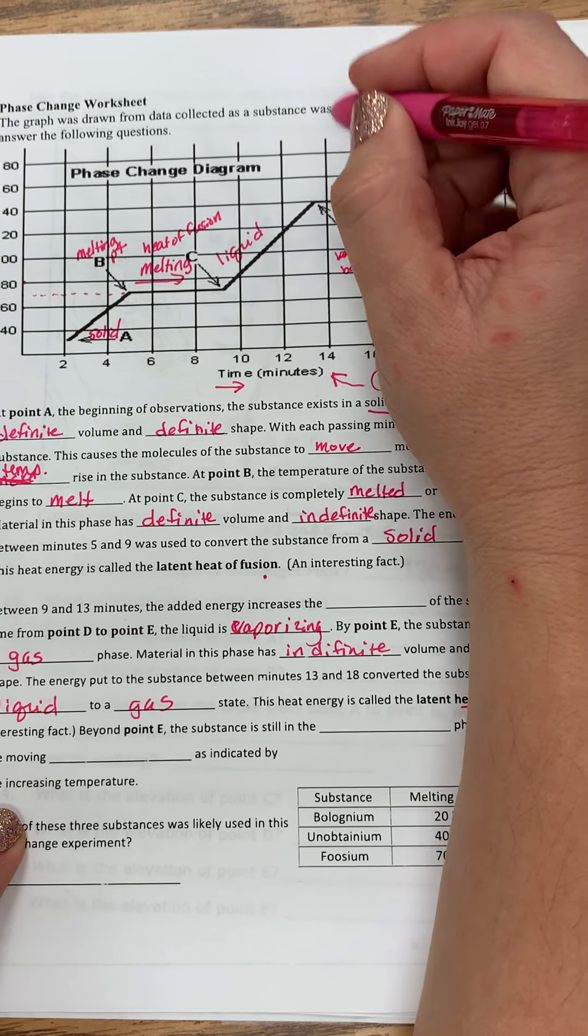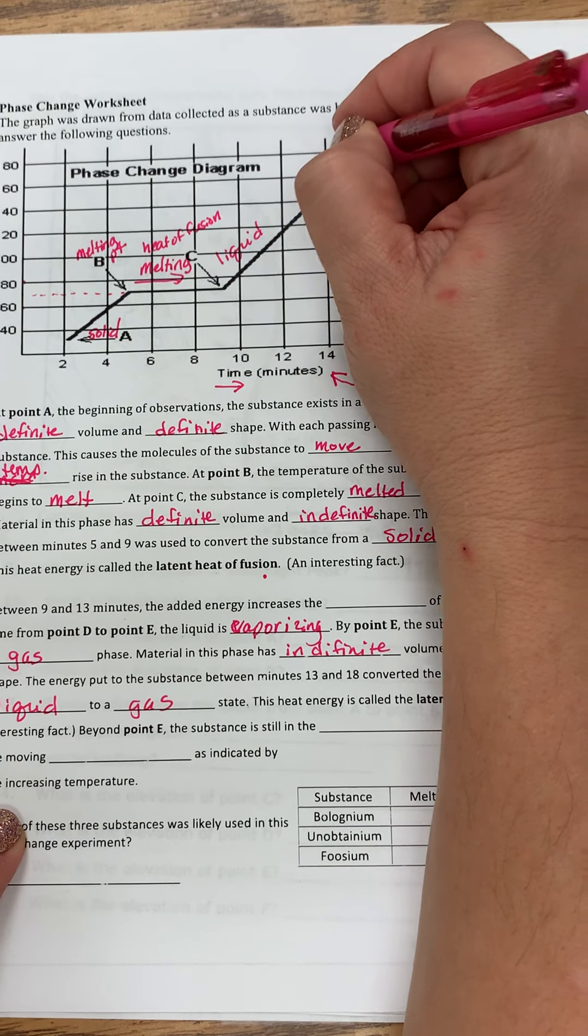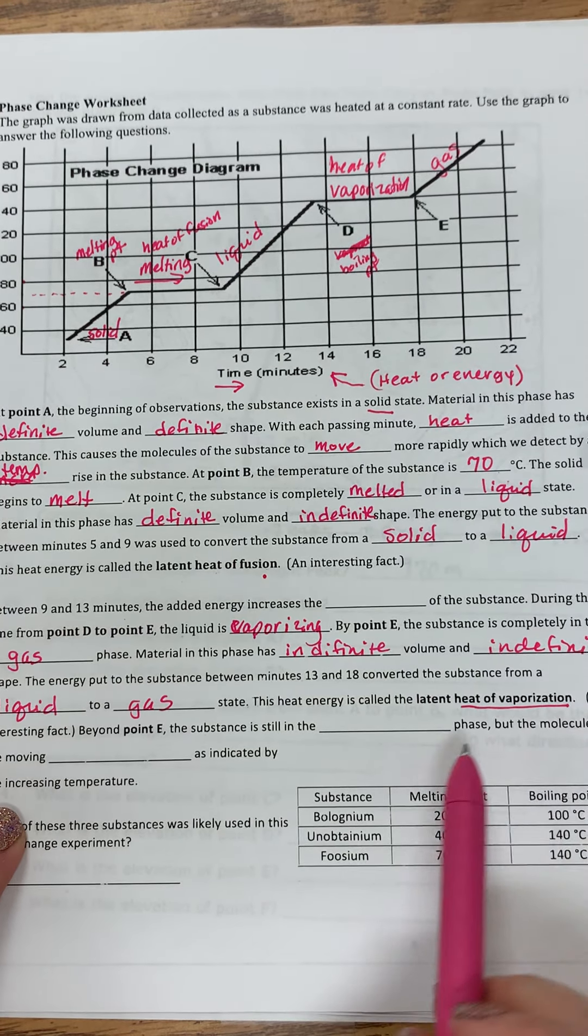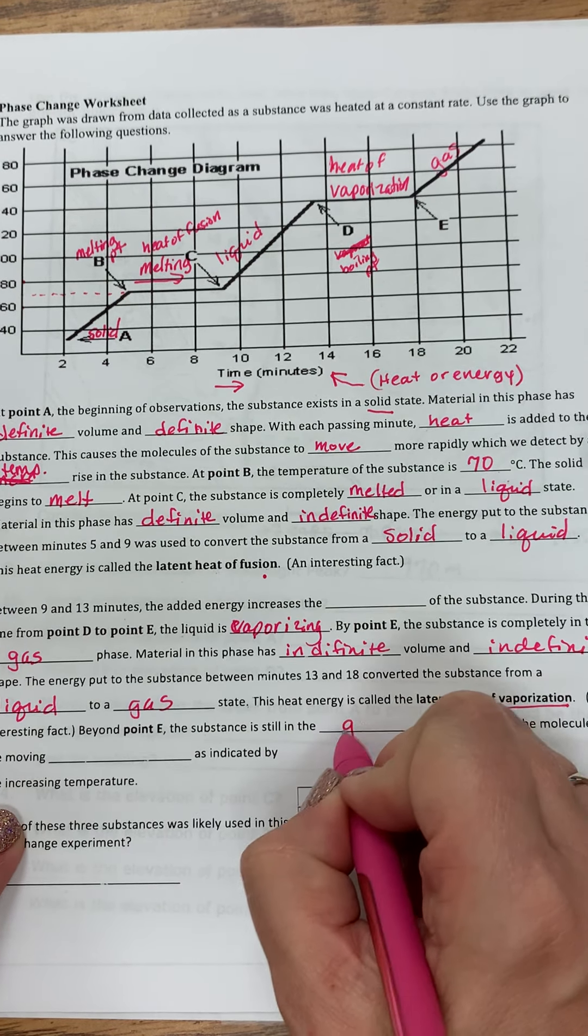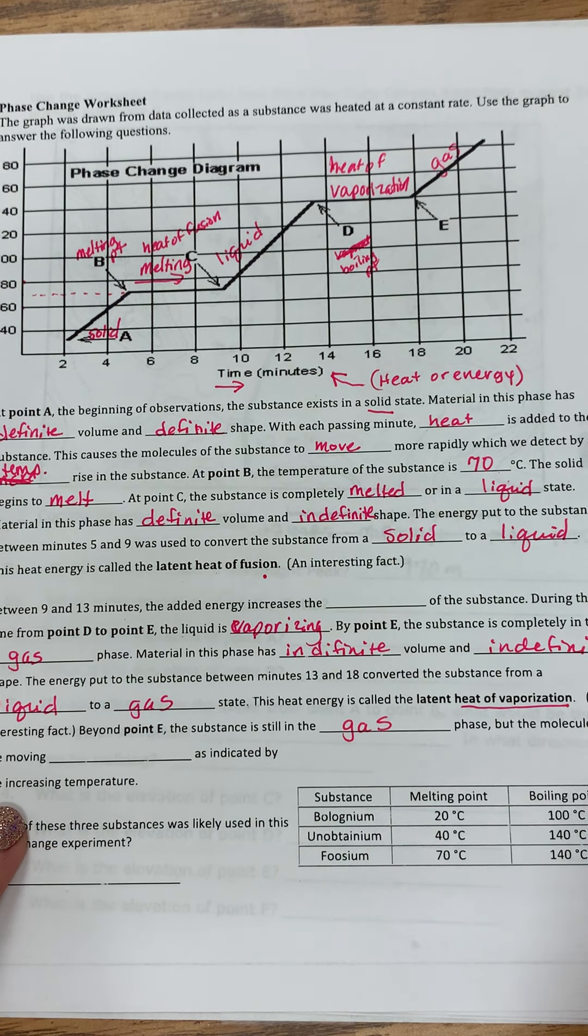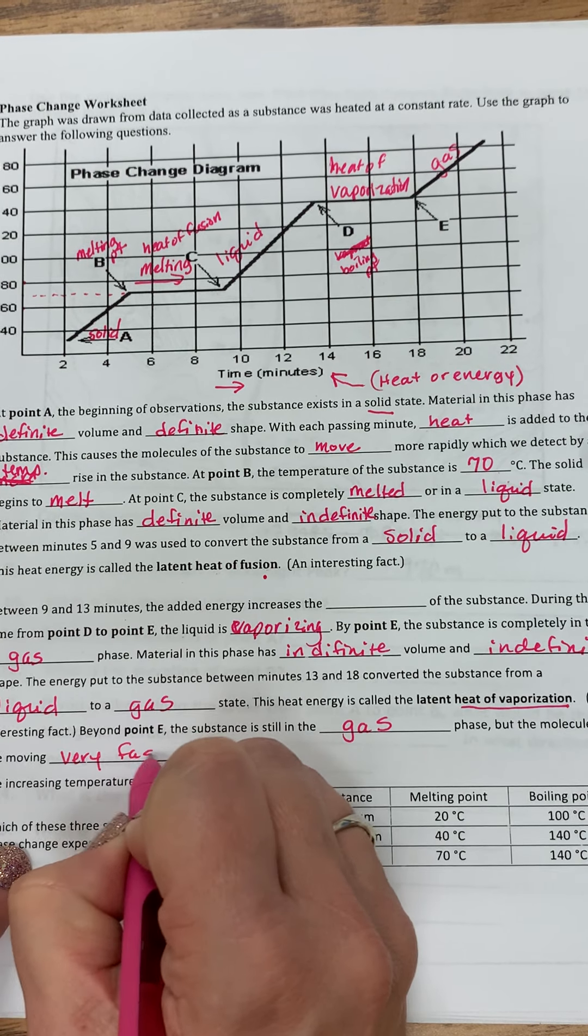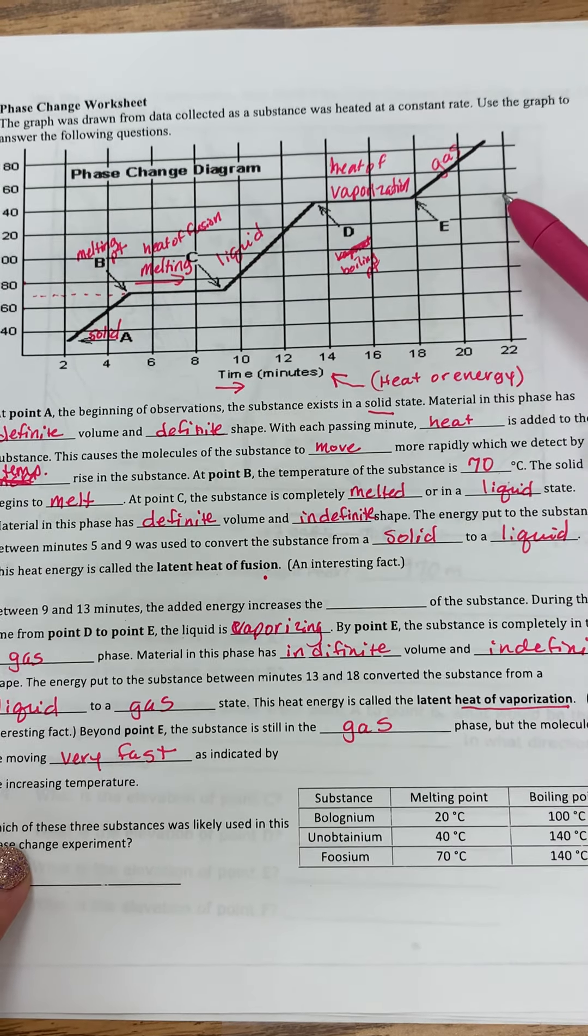We call this heat of vaporization. So you may see this as vaporization. You may see it as evaporation. You may see it as heat of vaporization. And beyond point E, the substance is still in the gas phase, but the molecules are moving very fast.